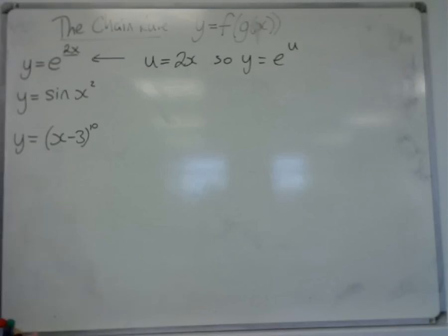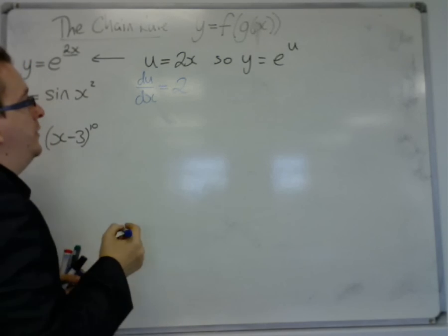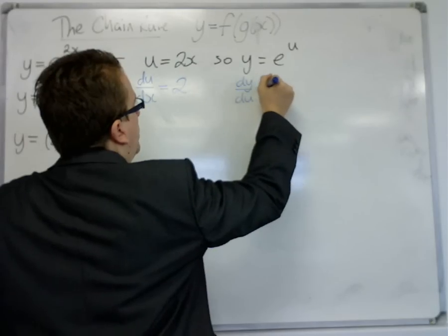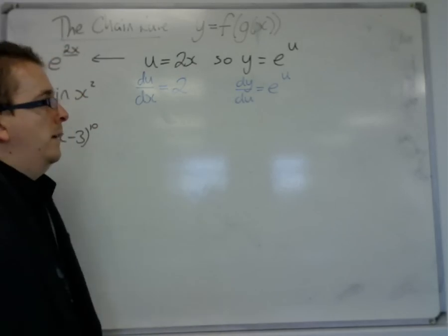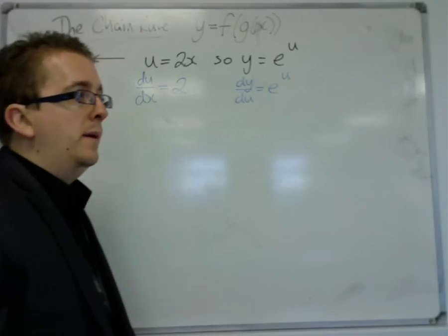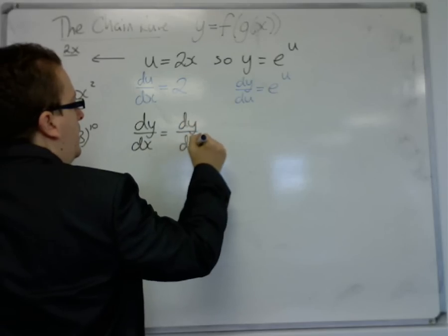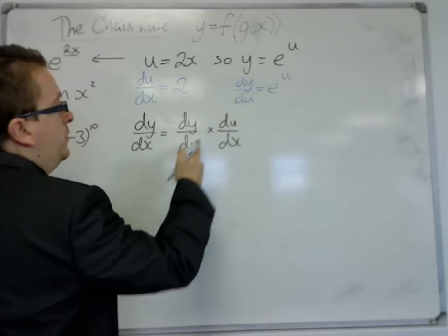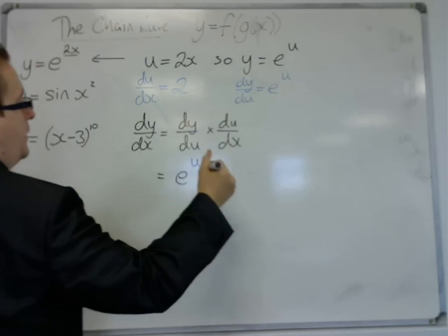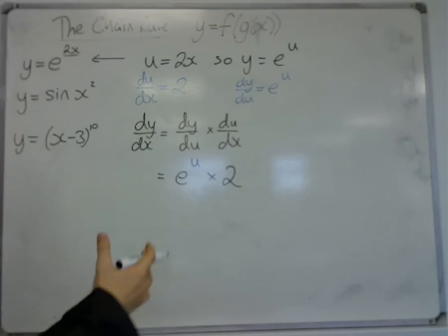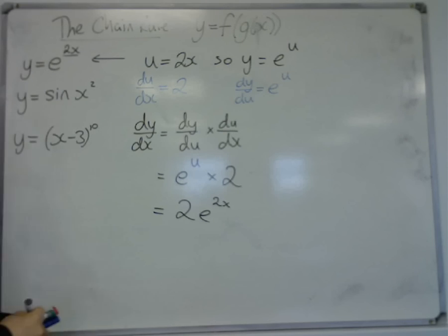Now, because we are working with differentiation here, there must be some differentiation involved. So we differentiate u with respect to x, which is 2, and we differentiate y with respect to u, which is just e to the u. This is where we throw in a case where I'm going to be using derivatives like fractions. So dy/dx could effectively be seen as dy/du times du/dx, because the du's would cancel, just leaving me with dy/dx. So dy/du is e to the u, and du/dx is 2, so we get 2 lots of e to the u. Now, u was 2x, so this is 2e to the 2x. And this is the chain rule in action.